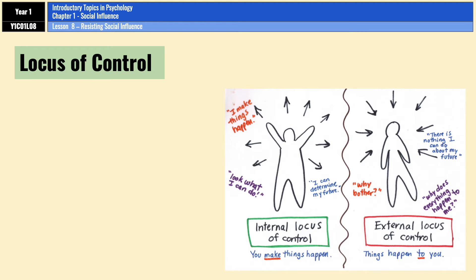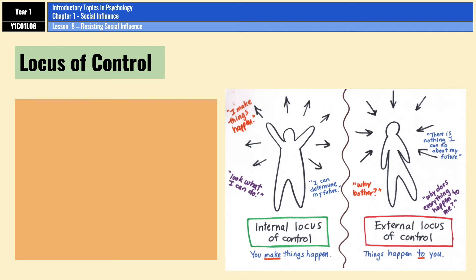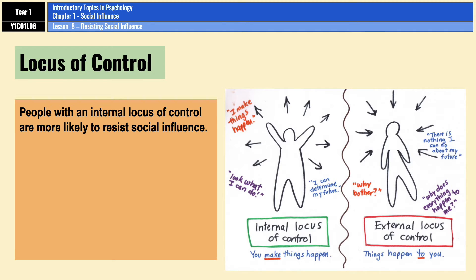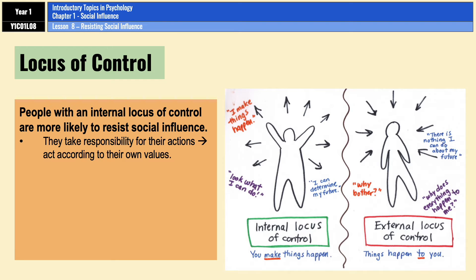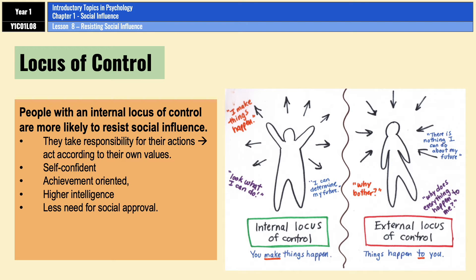People with an internal locus of control are more likely to resist social influence, for two main reasons. Firstly, somebody with an internal locus of control takes responsibility for their actions and experiences, whether good or bad, meaning they're more likely to act according to their own beliefs and values. Second, people with an internal locus of control tend to be more self-confident, more achievement-orientated, have higher intelligence, and have less need for social approval.